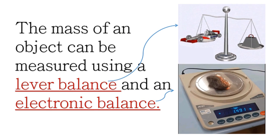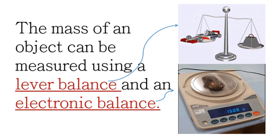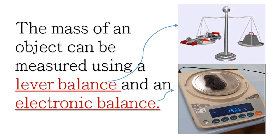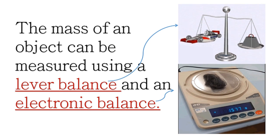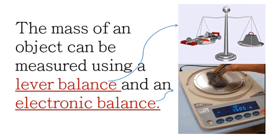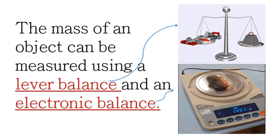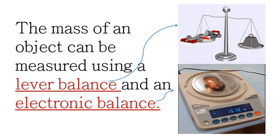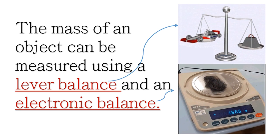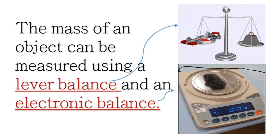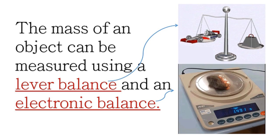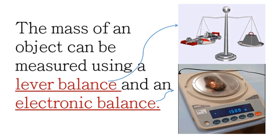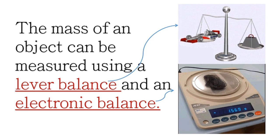For example, we have this lever balance and electronic balance. The mass of an object can be measured using a lever balance and an electronic balance. The lever balance is used to compare the masses of two objects, while an electronic balance is used to measure an accurate or precise amount of a substance or an object.